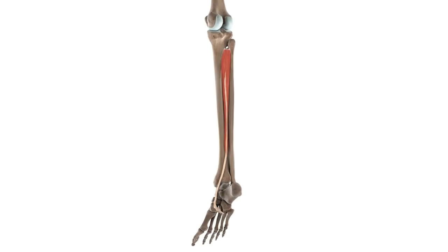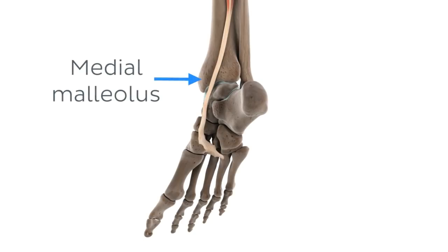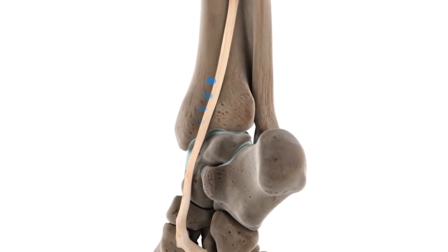Moving down to the distal end of the leg, we can see that the tendon courses through a groove posterior to the medial malleolus of the tibia, along with the tendon of another muscle, the flexor digitorum longus. This is an important landmark as this groove, the medial malleolar sulcus, acts as a pulley and is necessary for the functions of the tibialis posterior to be carried out.